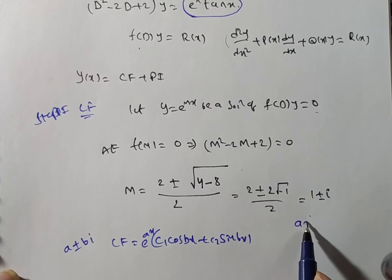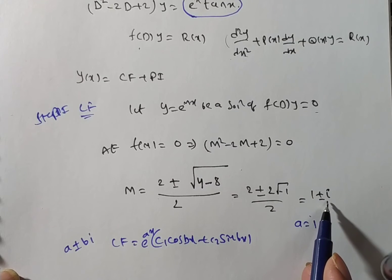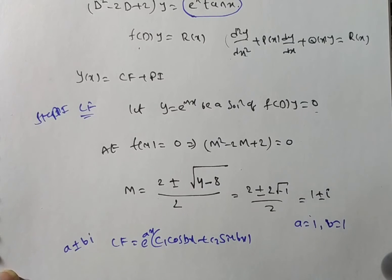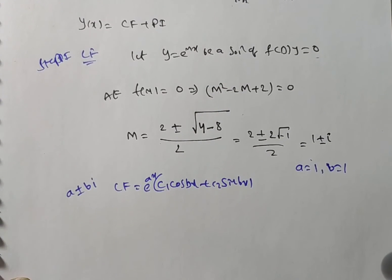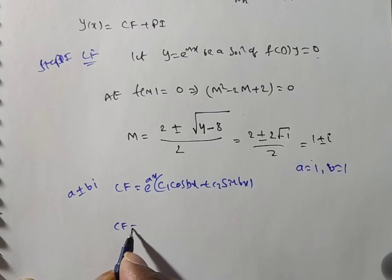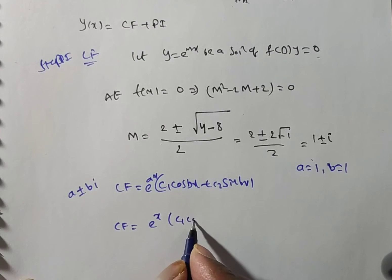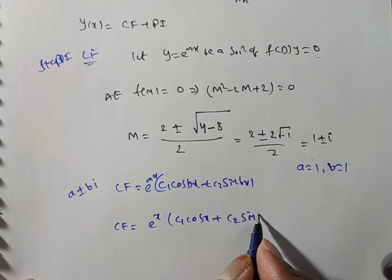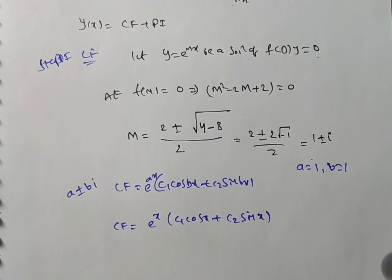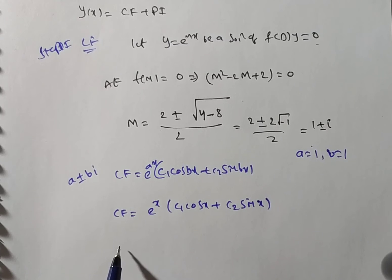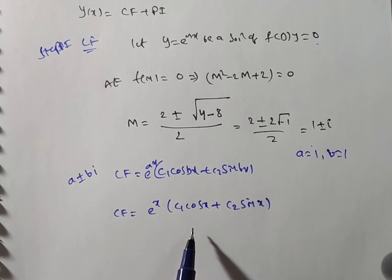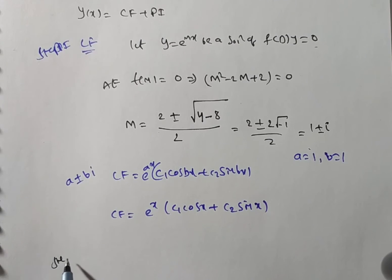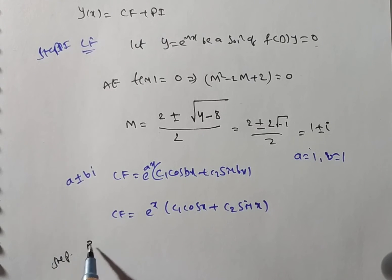Here a is the real part and b is the imaginary part. The real part a = 1 and the imaginary part b = 1. Substituting into the CF formula gives: CF = e^x · (c₁ cos(x) + c₂ sin(x)), where c₁ and c₂ are arbitrary constants.